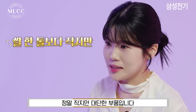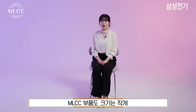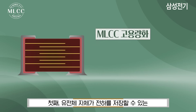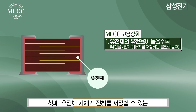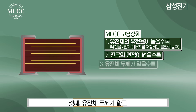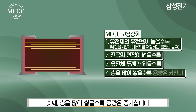As products become slimmer with more functions, the challenge is making MLCC smaller while increasing its capacity. Capacity increases with four factors: first, higher dielectric constant of the ceramic material; second, larger electrode area; third, thinner dielectric layers; and fourth, more stacked layers.